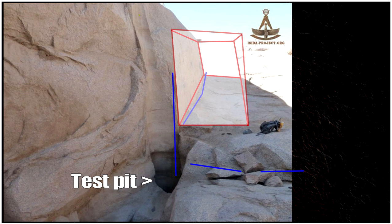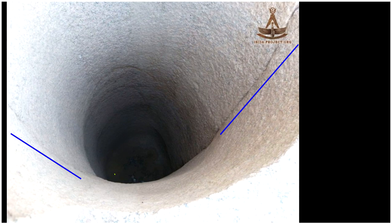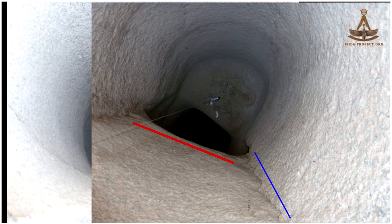Another technique that masons and quarrymen still use is to walk around with a hammer and bang bang bang — they can hear the cracks in there. That's what the test pits come from. Now this test pit has been cleared away, you can see it was already there. It continues down. Now let's go back to these test pit pictures. There's a crack there — what are they doing with these test pits? They're testing, looking for cracks.